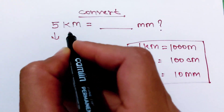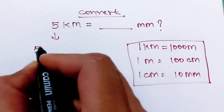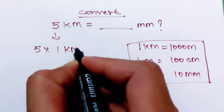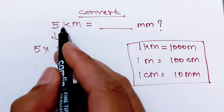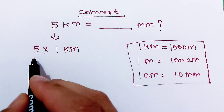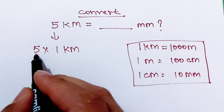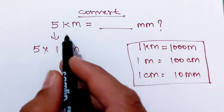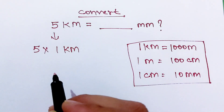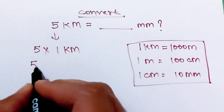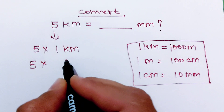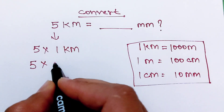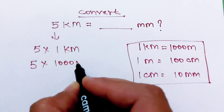First of all, we can write 5 kilometers as 5 multiplied by 1 kilometer. This term and this term are the same — if you multiply 5 into 1 kilometer, it equals 5 kilometers. Now, 5 multiplied by 1 kilometer can be written as 5 multiplied by 1000 meters.